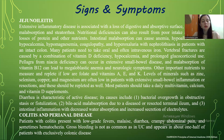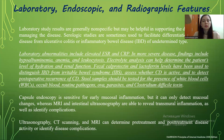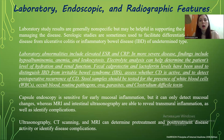Colitis and perianal disease. Patients with colitis present with low-grade fevers, malaise, diarrhea, crampy abdominal pain, and sometimes hematochezia. Gross bleeding is not as common as in ulcerative colitis and appears in about half of patients with exclusively colonic disease. Diagnostic laboratory studies are generally non-specific but may be helpful in supporting the diagnosis and management of the disease. Serological studies are sometimes used to differentiate Crohn's disease from ulcerative colitis or IBD of undetermined type.